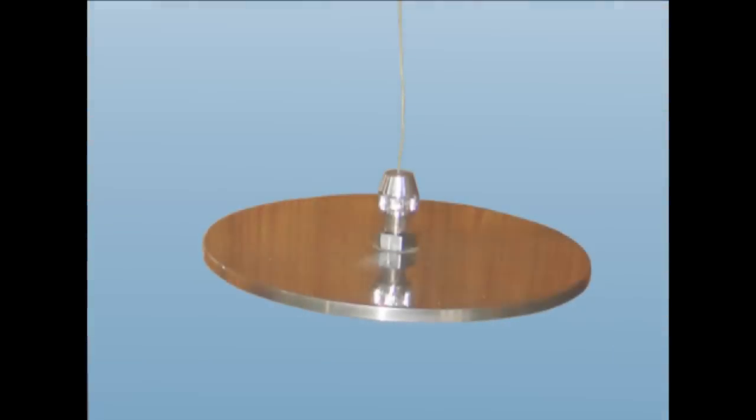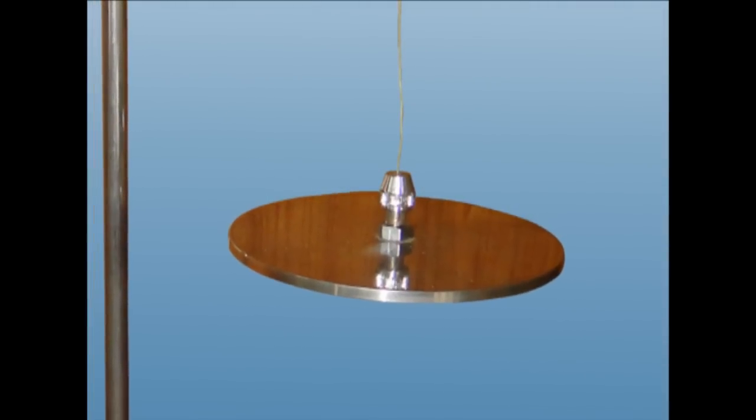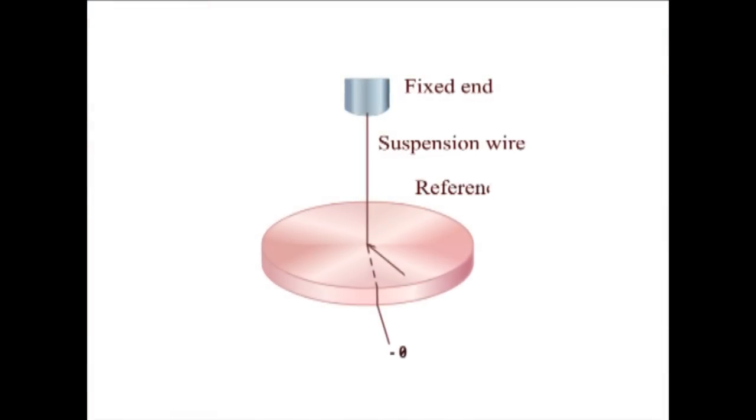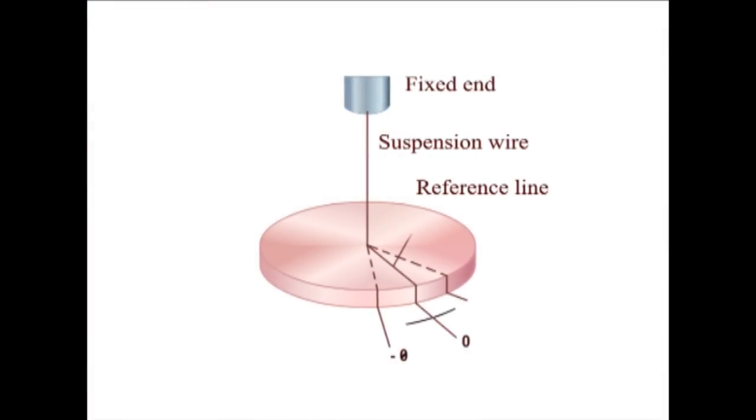A body which is suspended by thread or wire twists the suspension, first in one direction and then in reverse direction. But the center of the gravity of the body remains at one place at all the time.